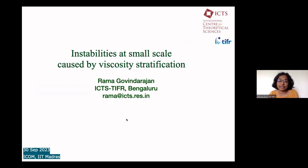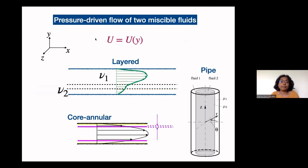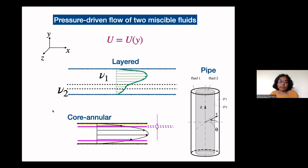Really sorry not to be there in person. I'm missing an excellent meeting but it was unavoidable circumstances. We'll talk today about instability at small scale caused by viscosity stratification. This has been a topic I've been working on for a long time, but there are some nice new results at very low Reynolds numbers, which is very appropriate for micro flows.